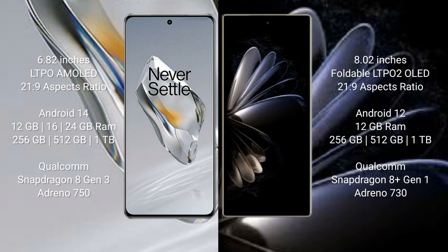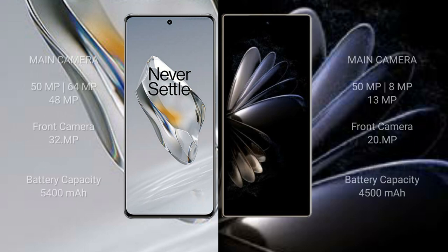OnePlus 12 comes with 12 GB, 16 GB, or 24 GB RAM and 256 GB, 512 GB, or 1 TB internal storage, Qualcomm Snapdragon 8 Gen 3 processor, and GPU Adreno 750. Xiaomi Mix Fold 2 comes with 12 GB RAM and 256 GB, 512 GB, or 1 TB internal storage, Qualcomm Snapdragon 8 Gen 1 processor, and GPU Adreno 730.